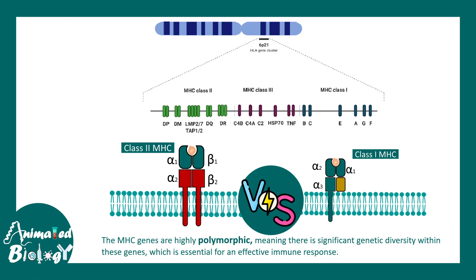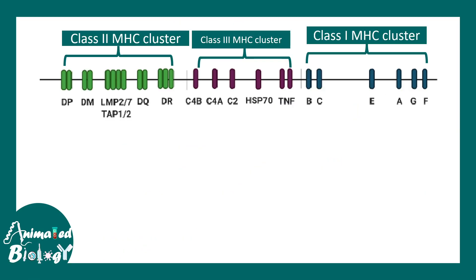The entire MHC gene is present on chromosome 6 and is known as the HLA cluster, or human leukocyte antigen cluster. This cluster is around 4,000 kilobase pairs long and contains different variations of Class 1, Class 2, and Class 3 MHC molecules. It's important to note that MHC genes are highly polymorphic, meaning there is significant genetic diversity within this gene in a population.